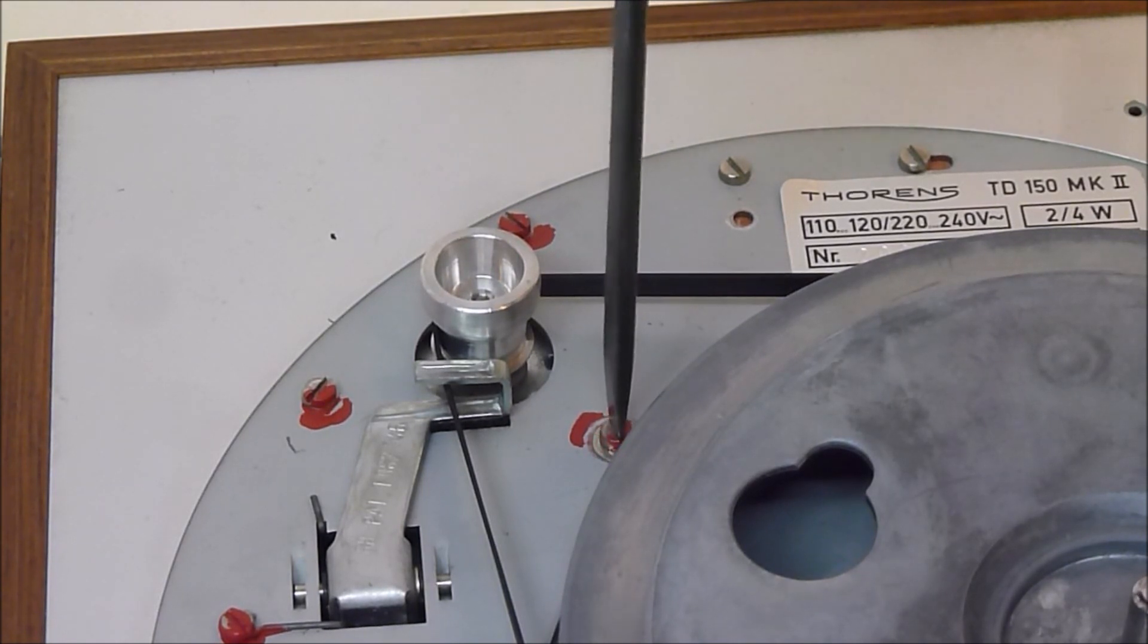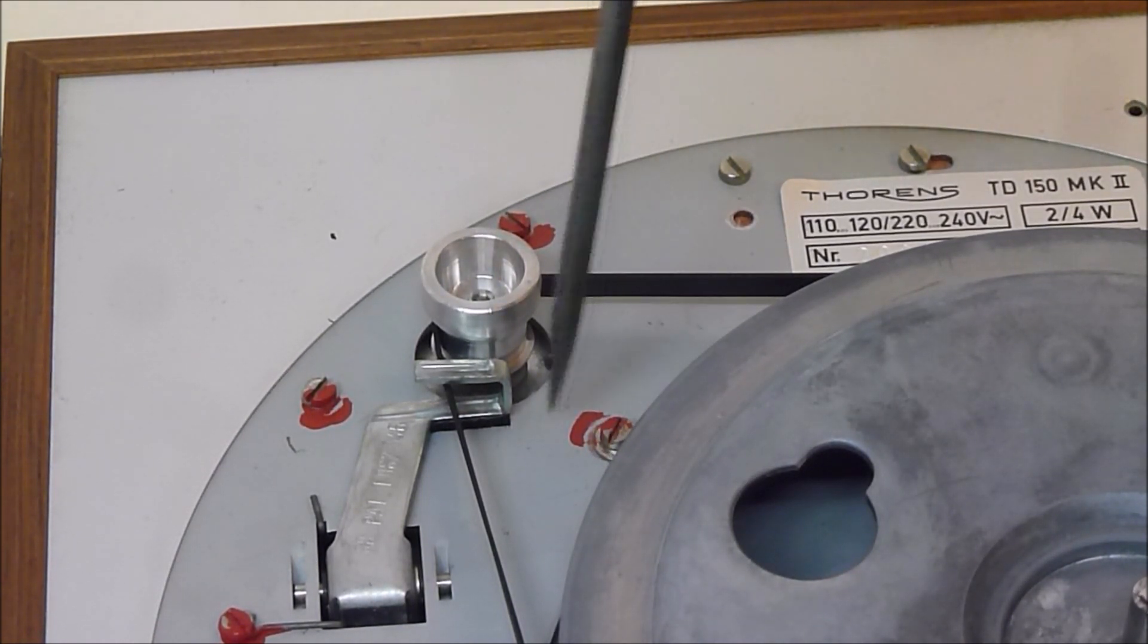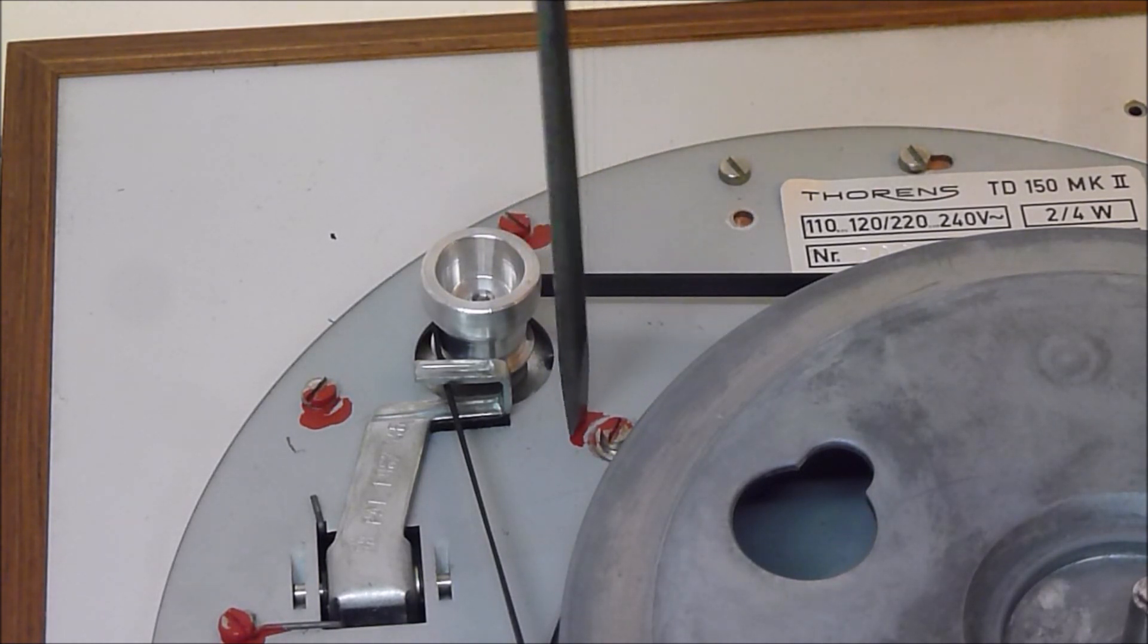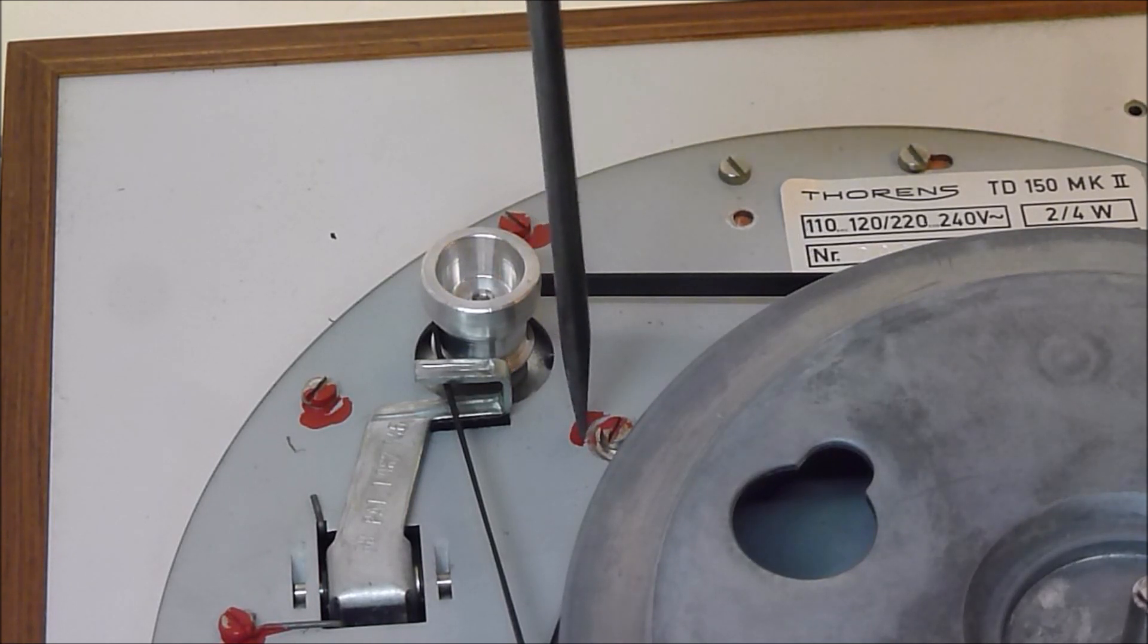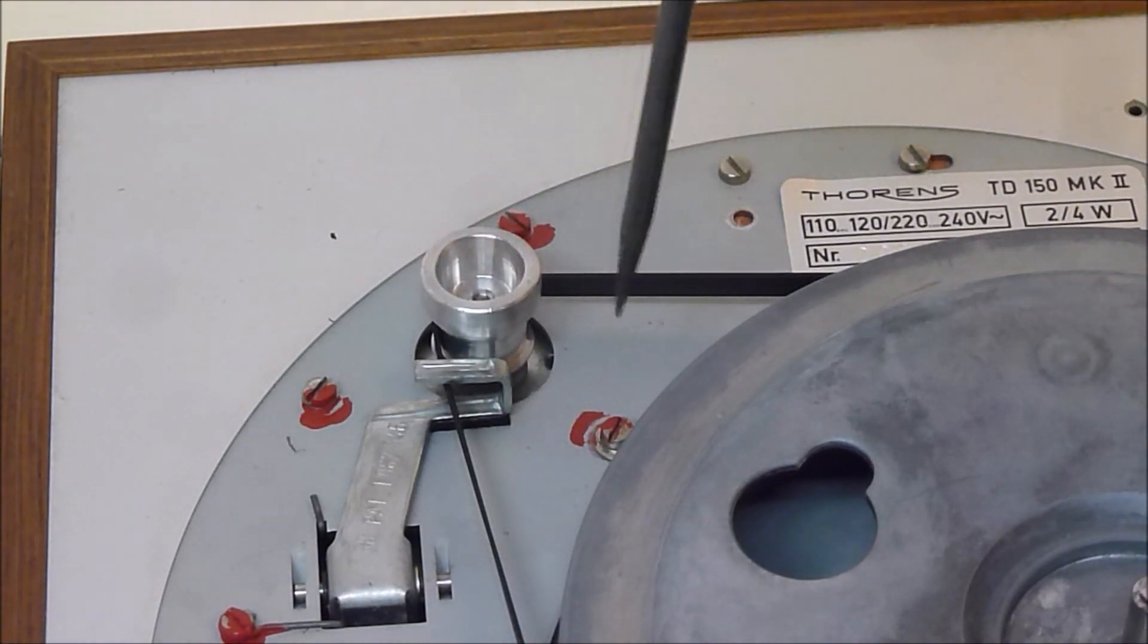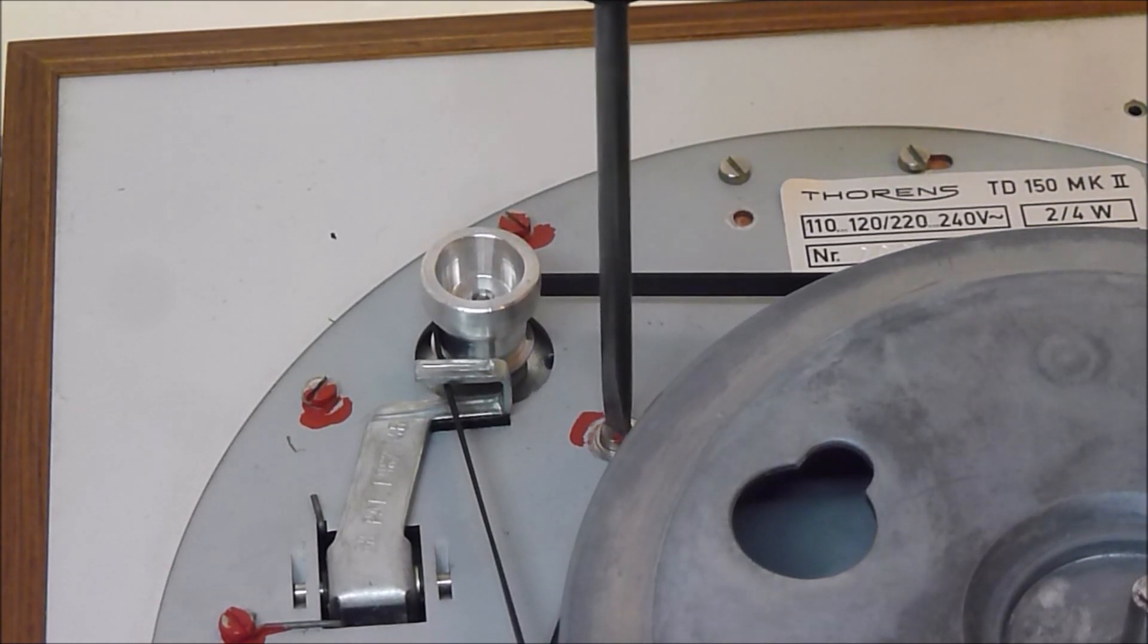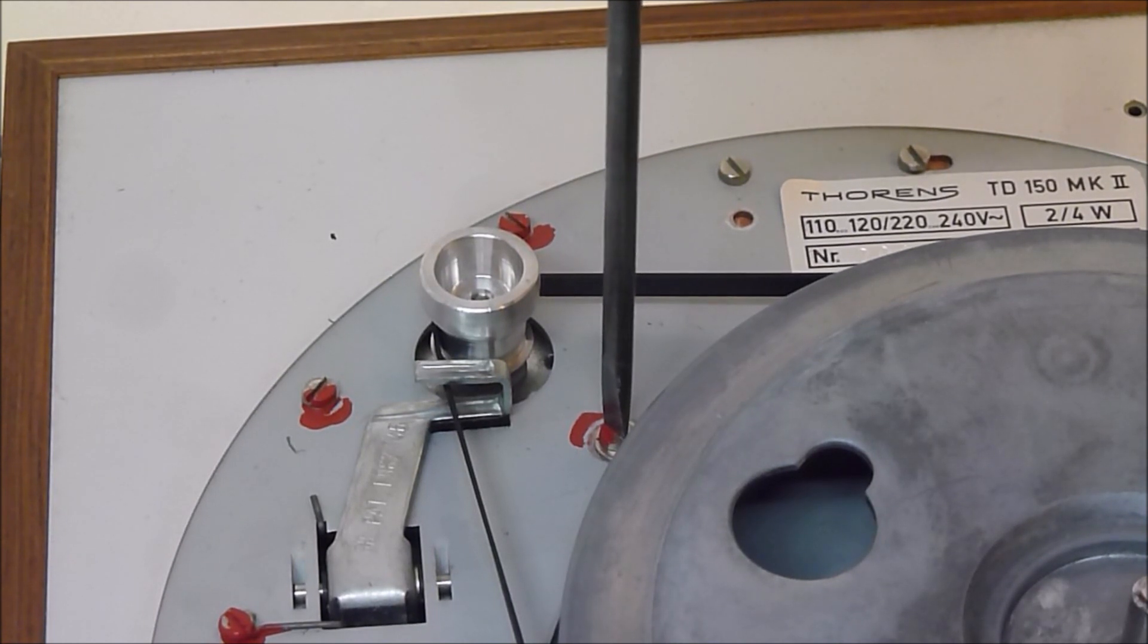And by turning this clockwise or anti-clockwise, it adjusts the tilt of the motor and therefore the belt running angle. So typically this was backed off. Typically we want to start with this fully clockwise.